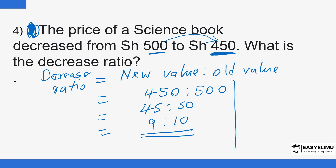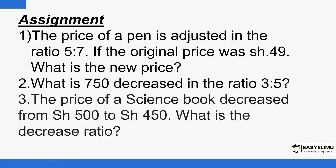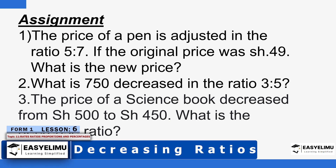If you're not given the new value and want to find it, take 9 over 10 times 500. If given the new value and asked for the old, it is 10 over 9 times the new value. That is basically how you handle decreasing ratios. We have a few practice questions — please attempt them and post your responses in the comment section, where we'll provide feedback. That marks the end of this lesson. Until next time, goodbye.